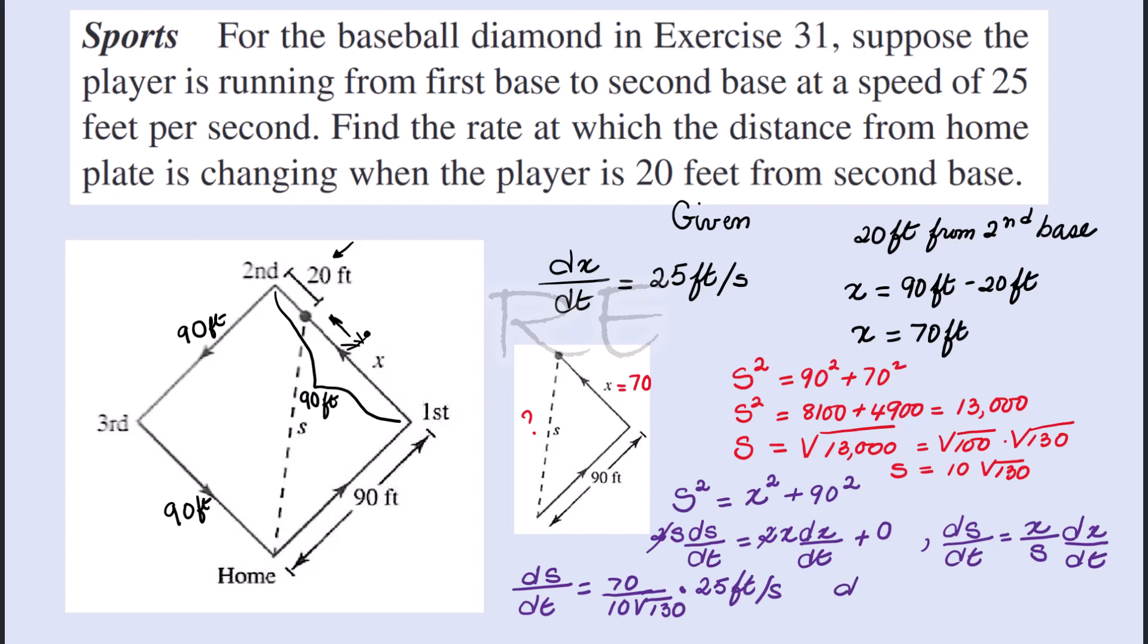After we cancel, 7 times 25 is 175 divided by √130. This equals 175/√130 feet per second, which is approximately 15.36 feet per second.